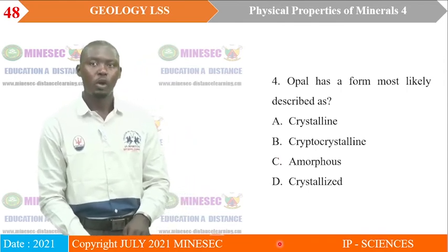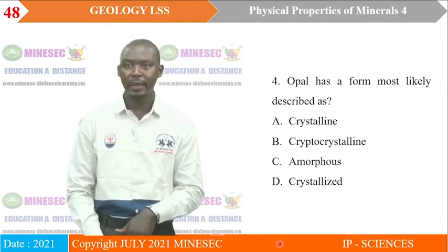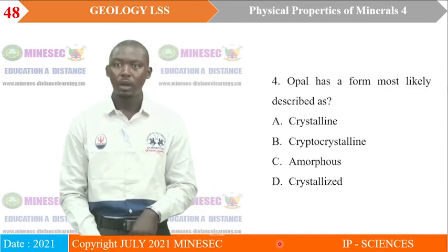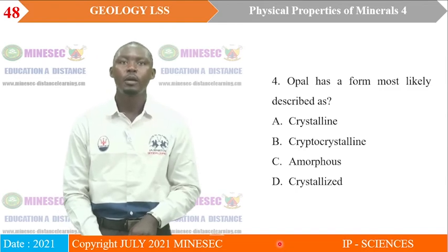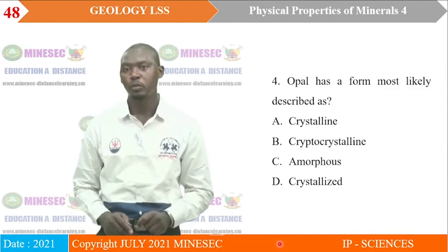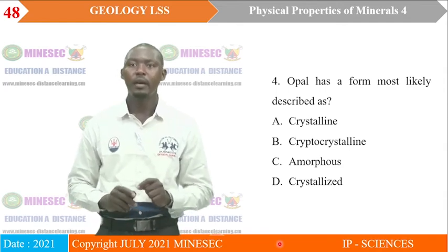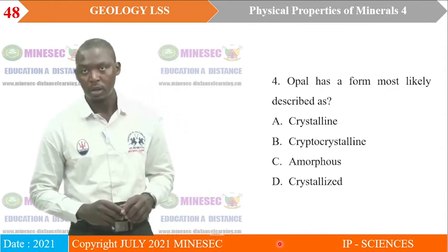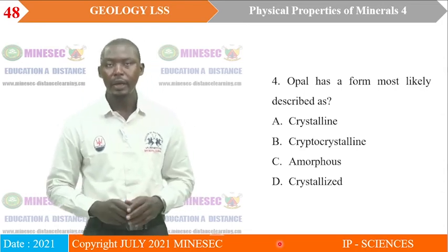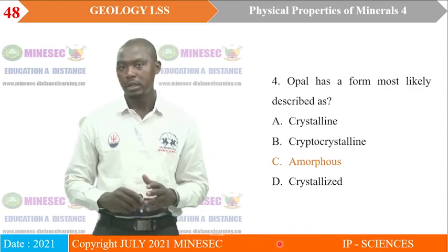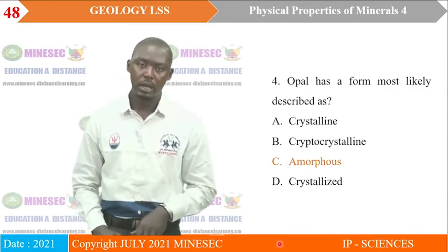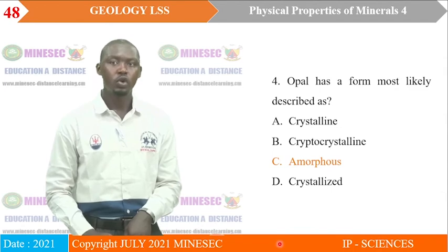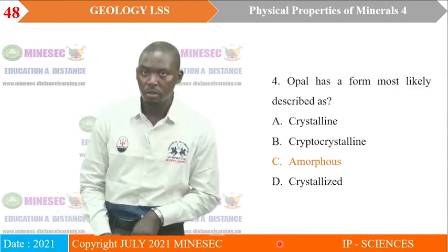Question 4: Opal has a form most likely described as: crystalline, cryptocrystalline, amorphous, or crystallized. Remember, during our lesson we said the same compound can have different forms — crystalline, cryptocrystalline, amorphous, or crystallized — and we took the example of silica. Our correct answer is C. Opal, as a compound of silica, is amorphous and hydrated. So opal is hydrated, amorphous silica.